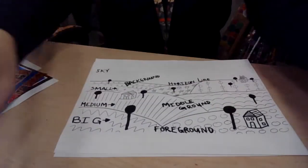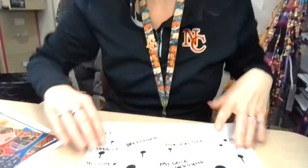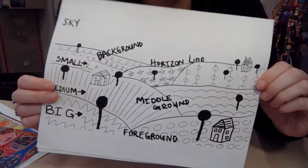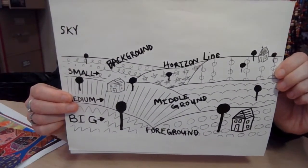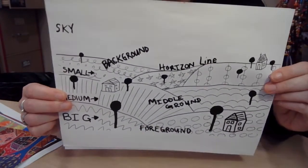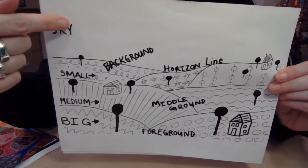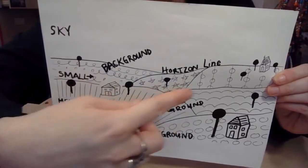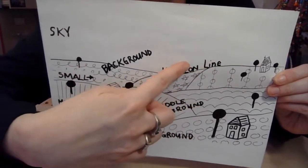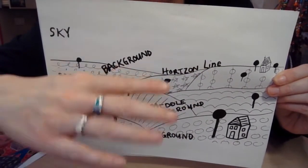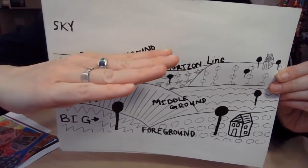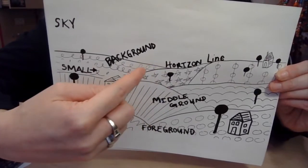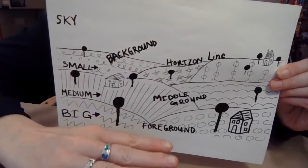A landscape is a picture of land. Your landscape is going to have possibly a big or small sky — that will be up to you. Your landscape is going to have the horizon line. The horizon line is the line that separates the sky from the land. So wherever you draw your horizon line, it's going to separate your sky from your land.